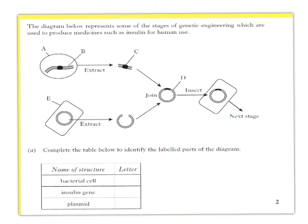For your National Five, you have to know the process of genetic engineering. This is a typical example of a question that would come up where it shows the stages of genetic engineering. In this case it's looking at producing a medicine such as insulin for human use. You need to identify the different stages that are happening and answer the question. This asks you to complete a table to identify the parts labelled in the diagram.